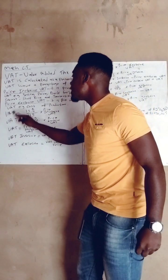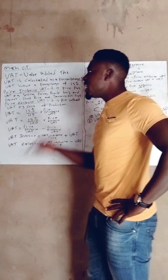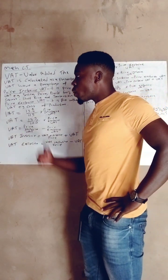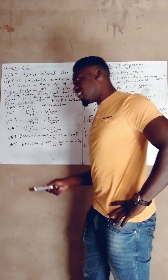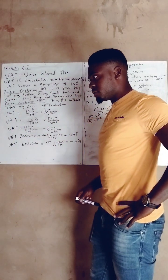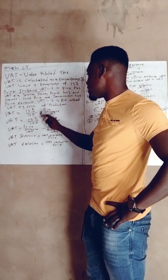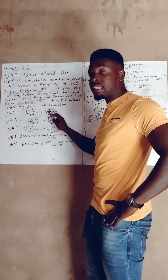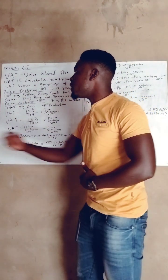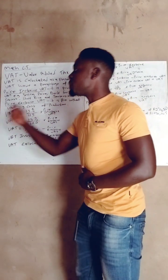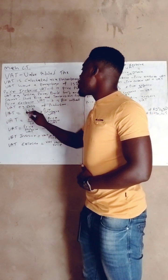When the VAT is already included, we calculate it this way: VAT = 15% ÷ 115 × price. For instance, let's say a person is going to buy a phone and the phone costs R1,500, and the VAT has already been included. We calculate: VAT = 15% ÷ 115 × 1,500. The VAT is already included, so that is how we calculate it.